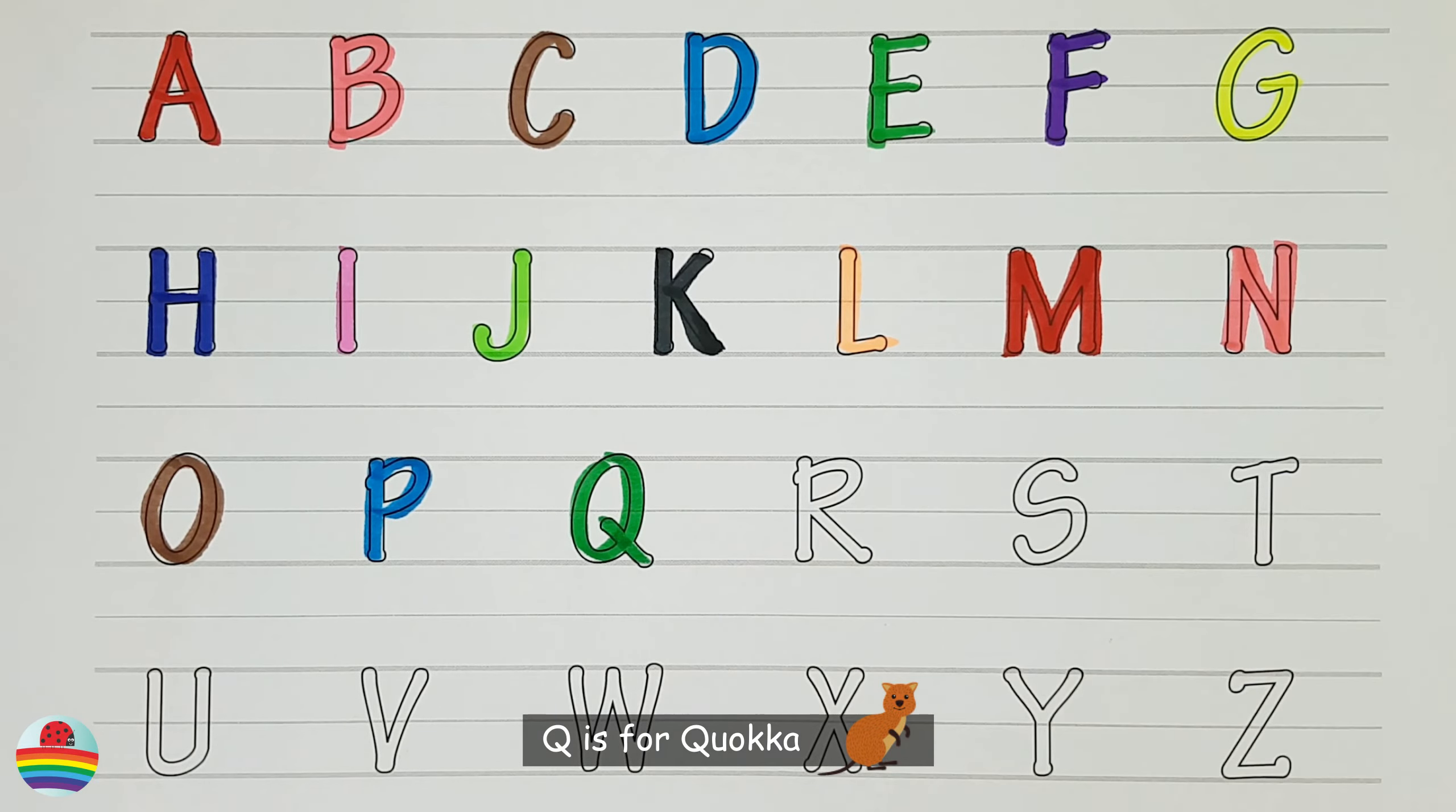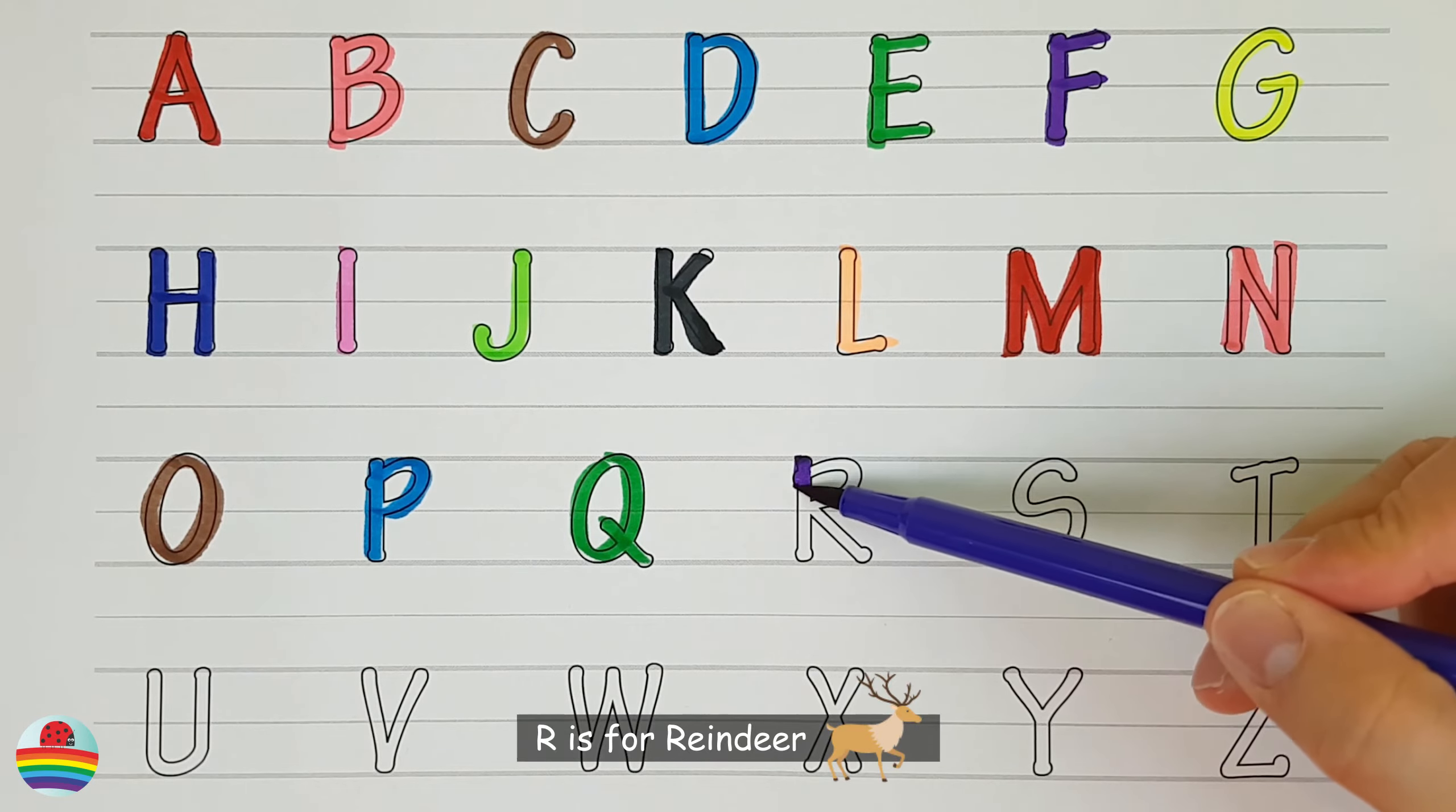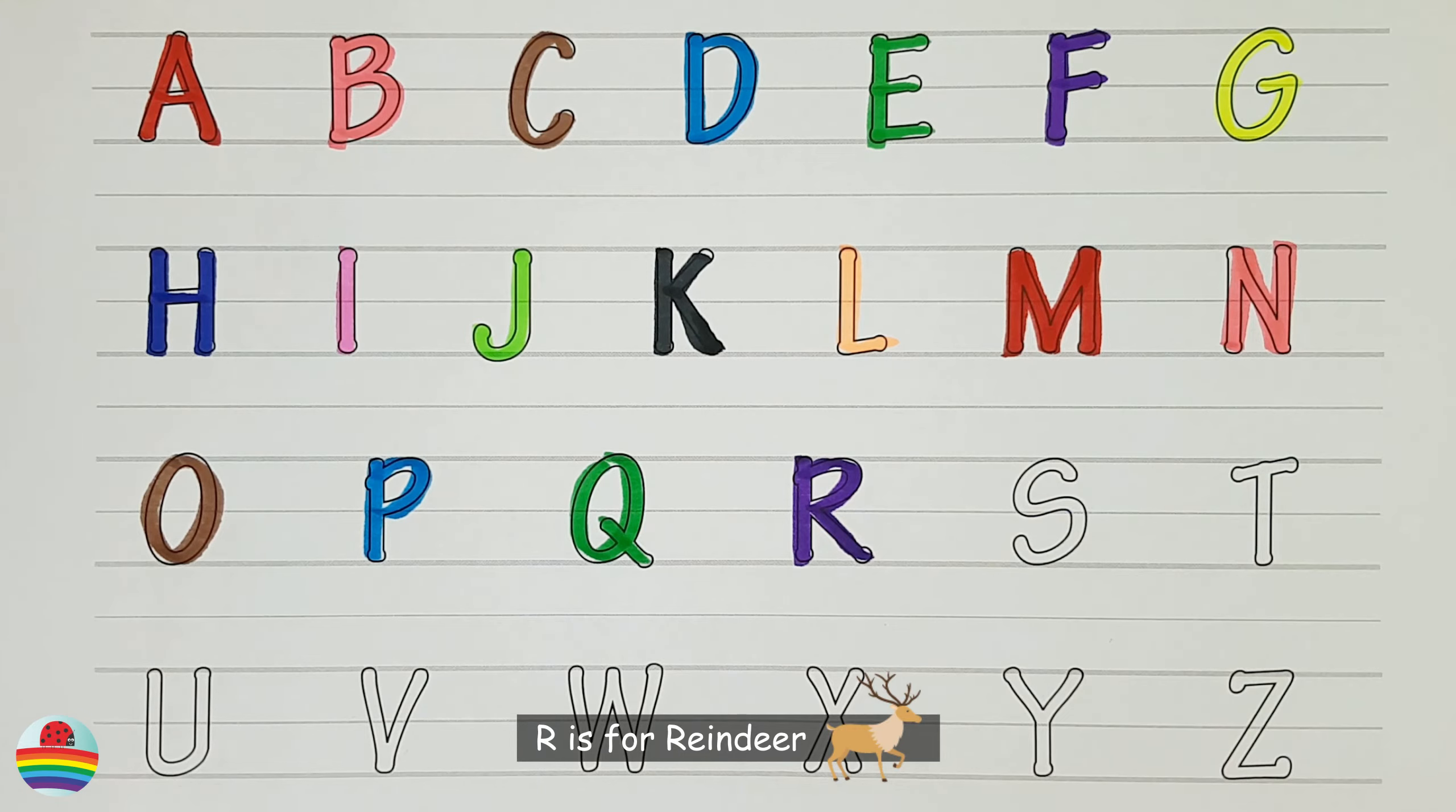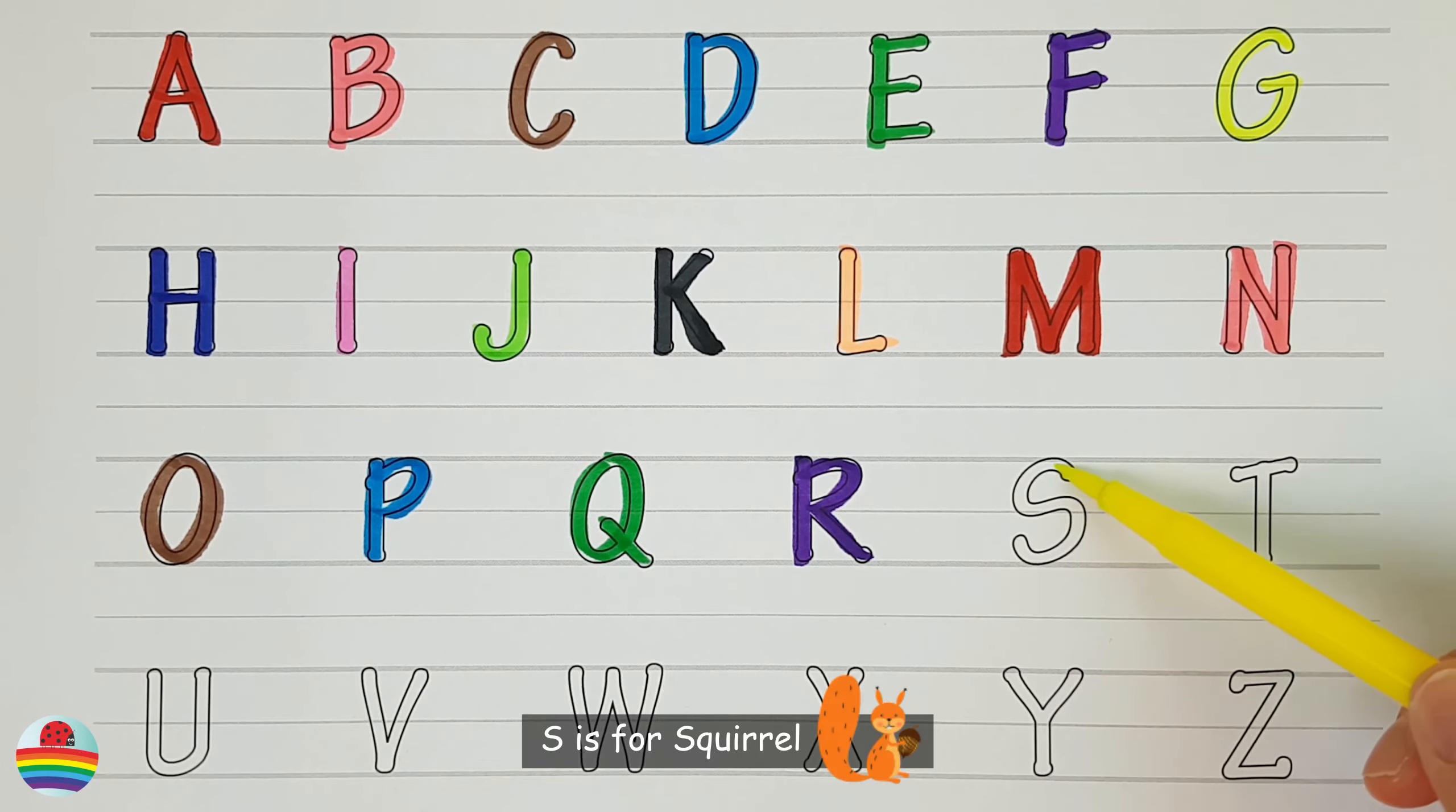Q. Q is for quokka. Q. R. R is for reindeer. R. S. S is for squirrel.